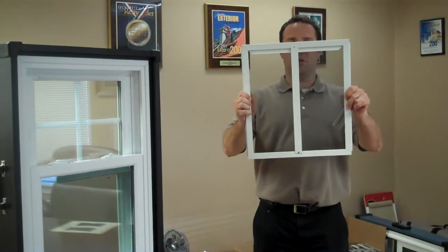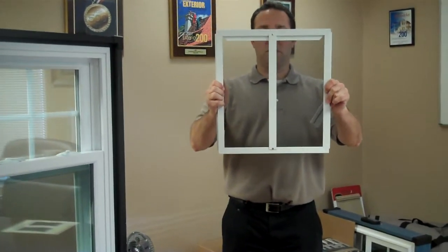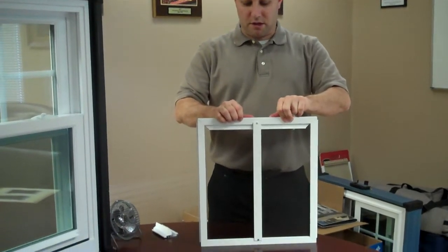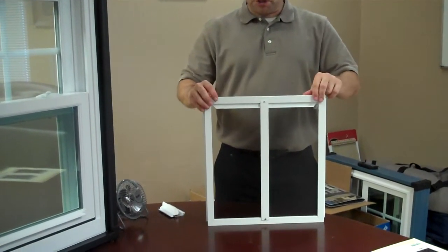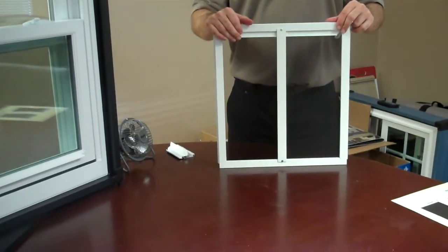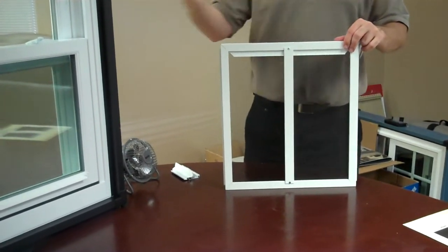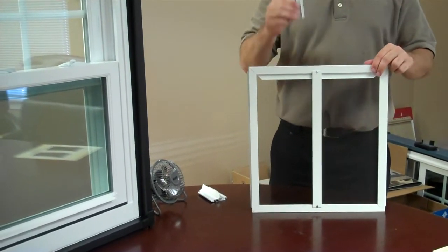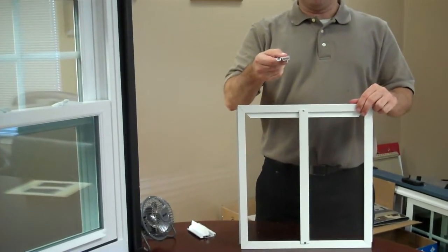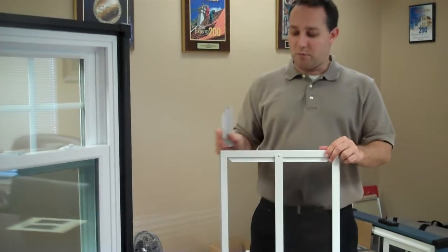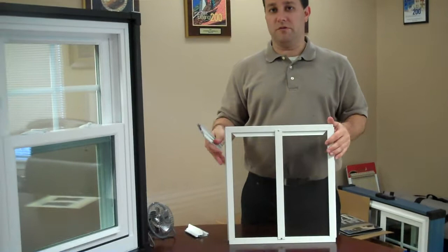So these screens, when they're in your window, are very structurally strong where you can't actually bend the framework of the actual screen itself. So again, you have a very strong storm and you have a tremendous amount of airflow hitting against the outside of your window. You're going to see that the extruded aluminum is going to withstand the gale force winds a lot more than just a roll form screen would.